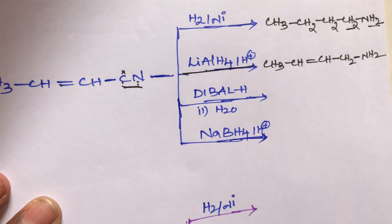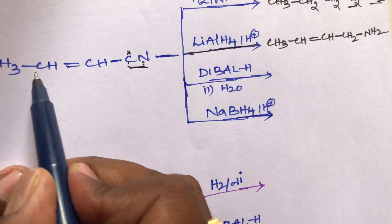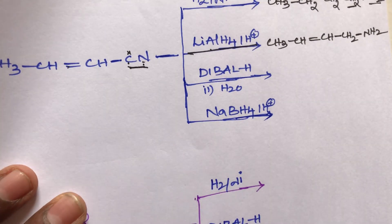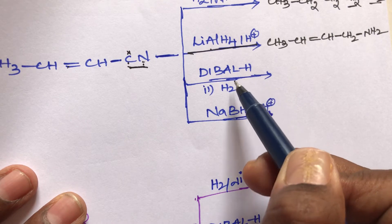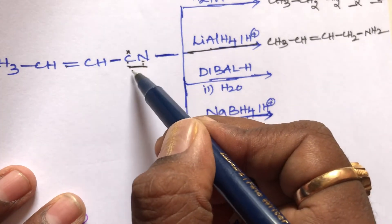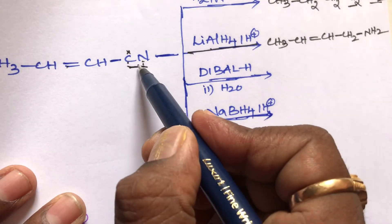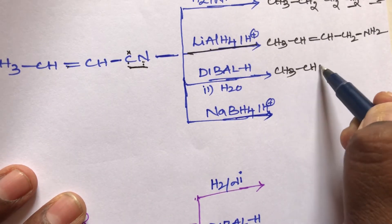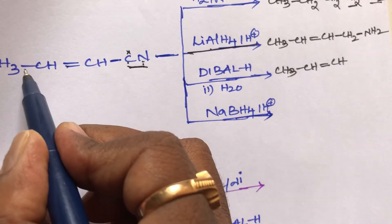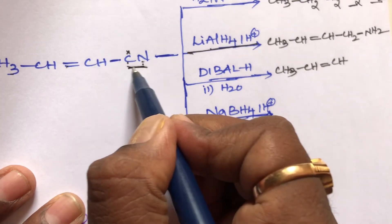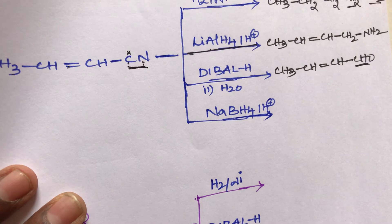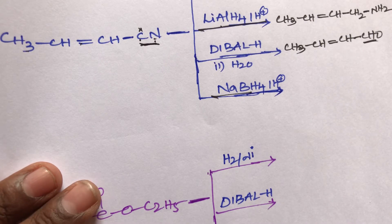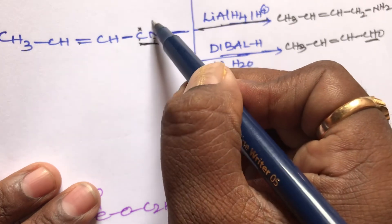Third: this compound reacts with DIBAL in the presence of water. DIBAL can reduce only the cyanogroup; it cannot reduce the double bond. The cyanogroup is converted into an aldehyde. So the final product is CH3-CH=CH-CHO — the double bond is preserved and the cyanogroup becomes an aldehyde.